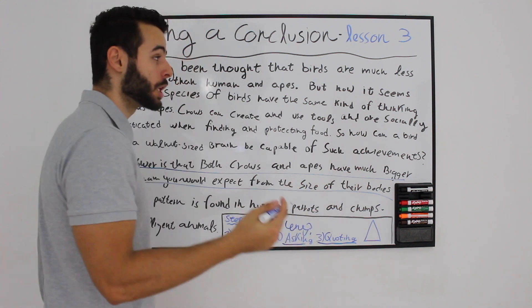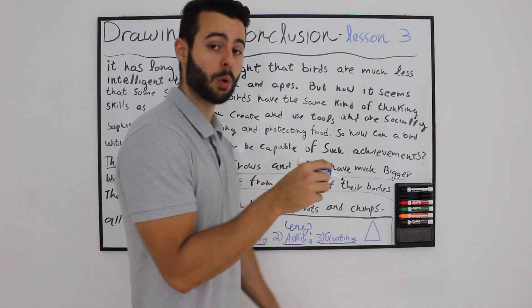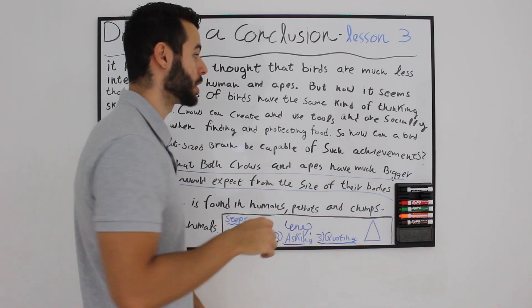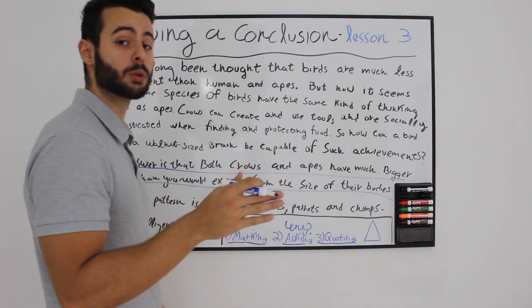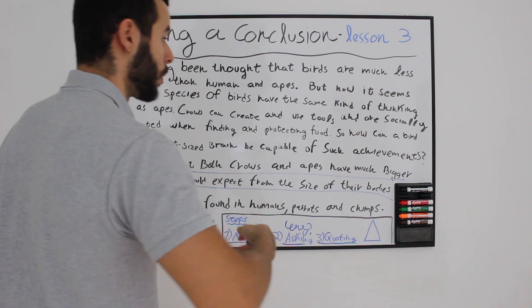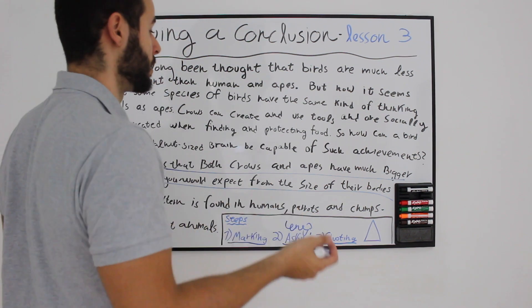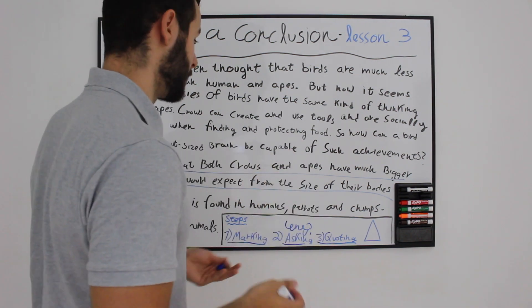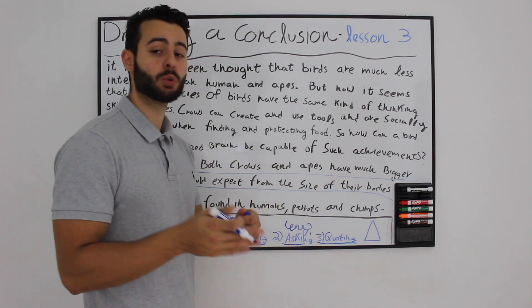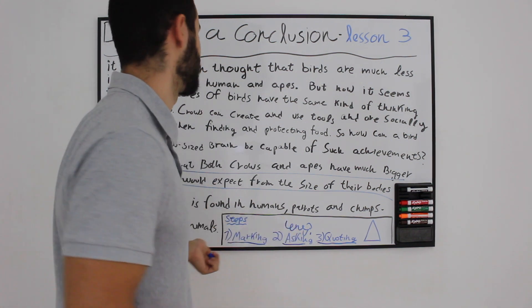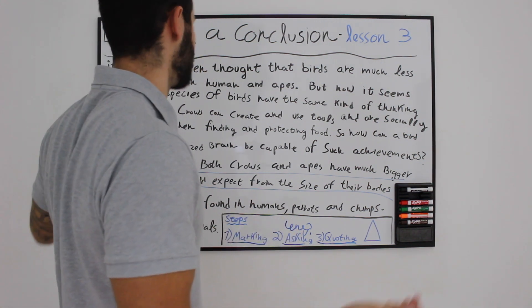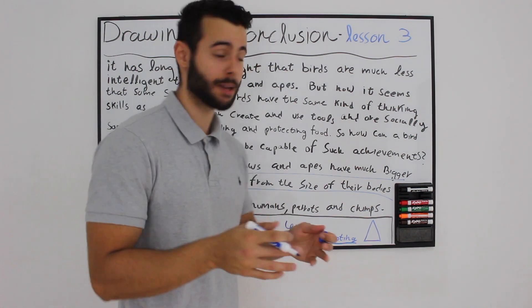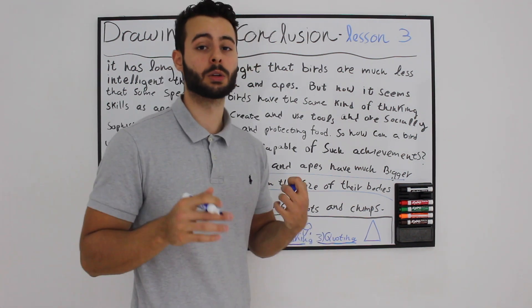Second step is actually write in your own words a small sentence, a short sentence that actually says what you think the conclusion is. I think the conclusion is, after I read this entire paragraph, that brain size doesn't matter, it's only the ratio between the brain to the body. I think it's a great conclusion. So now we have a short line that says what we think is the conclusion.